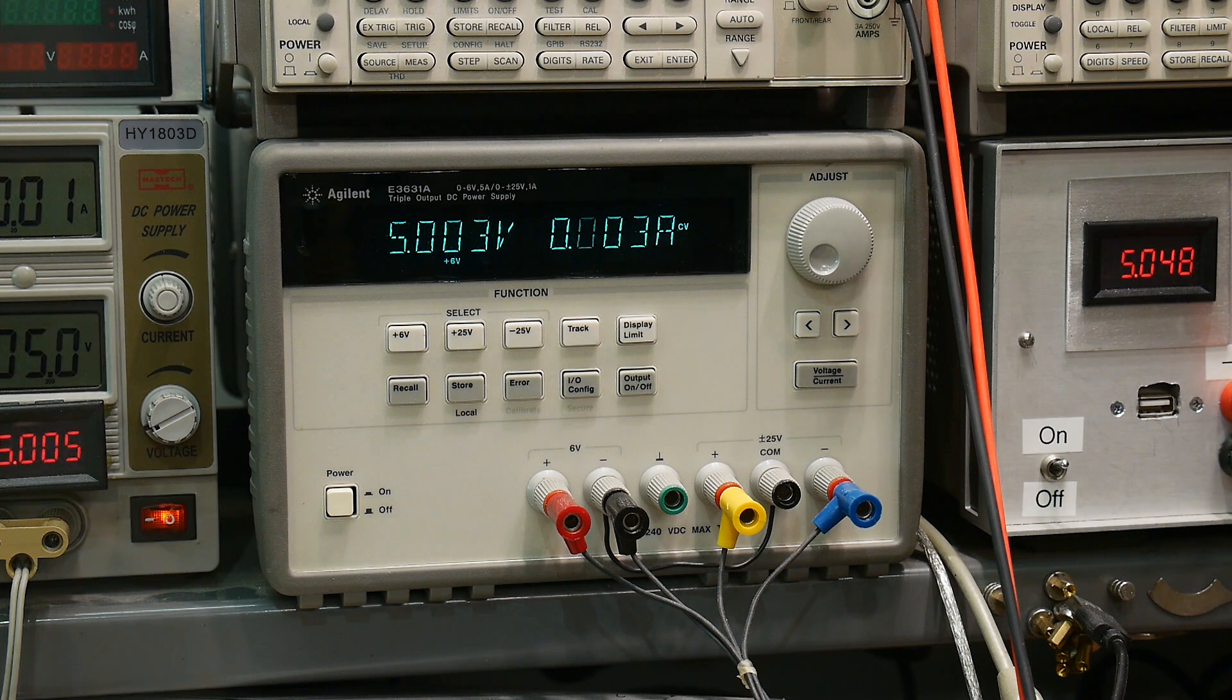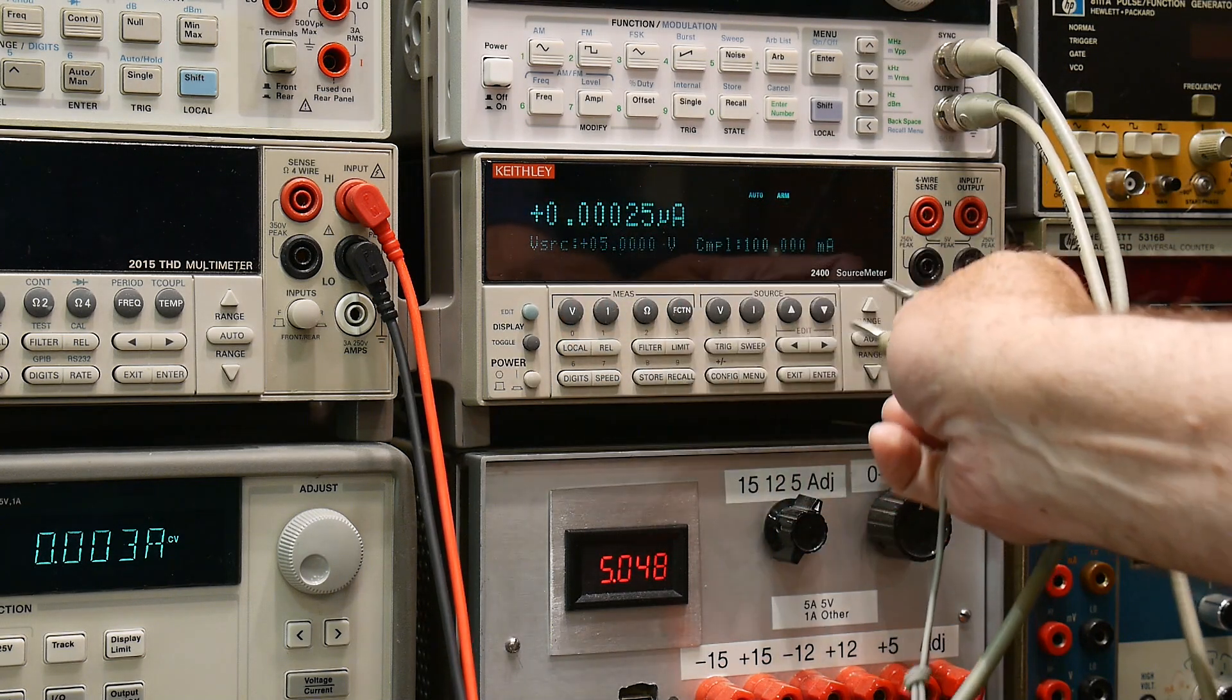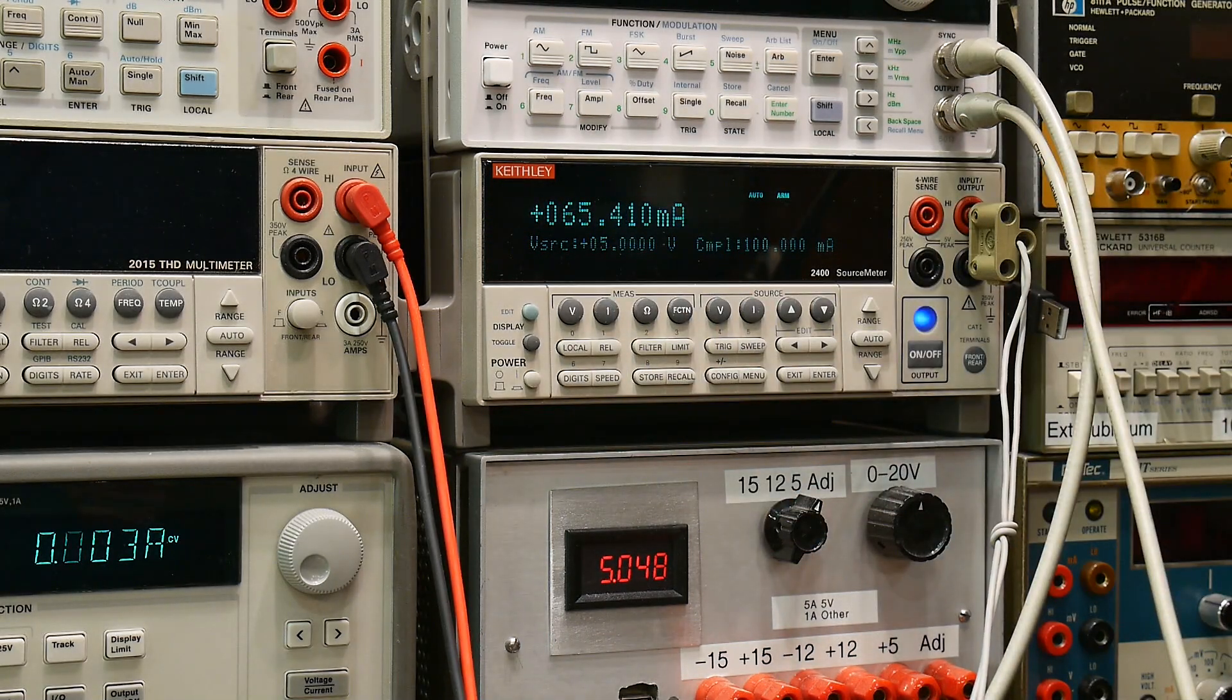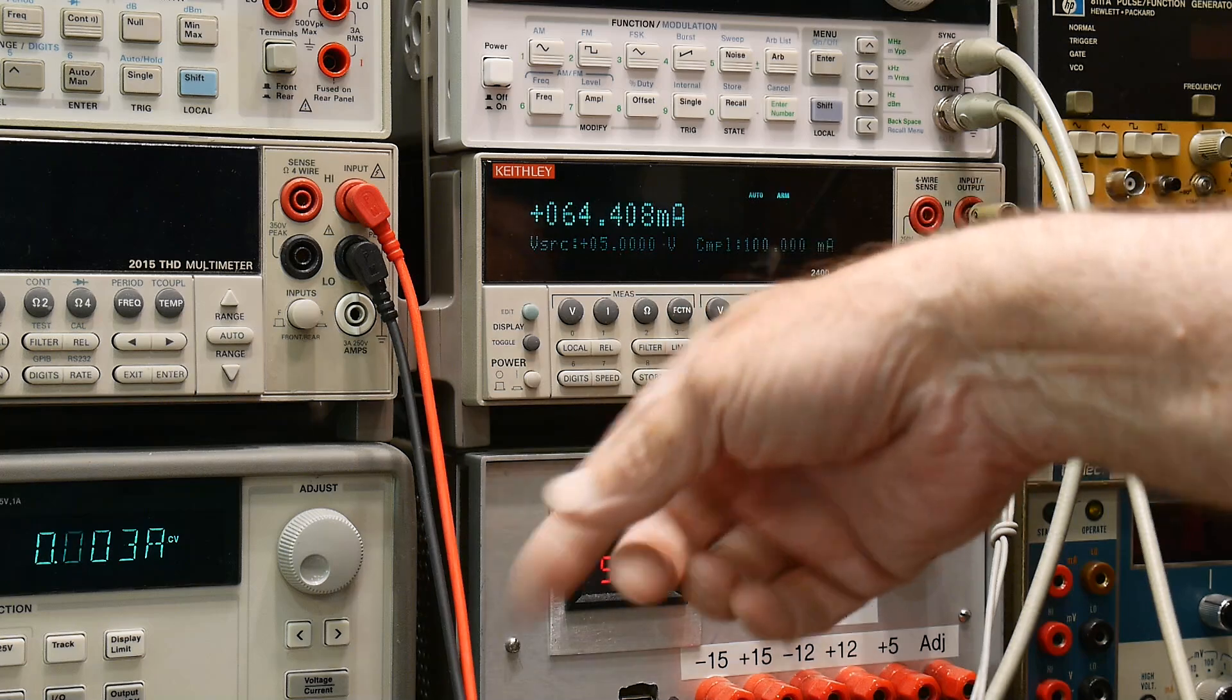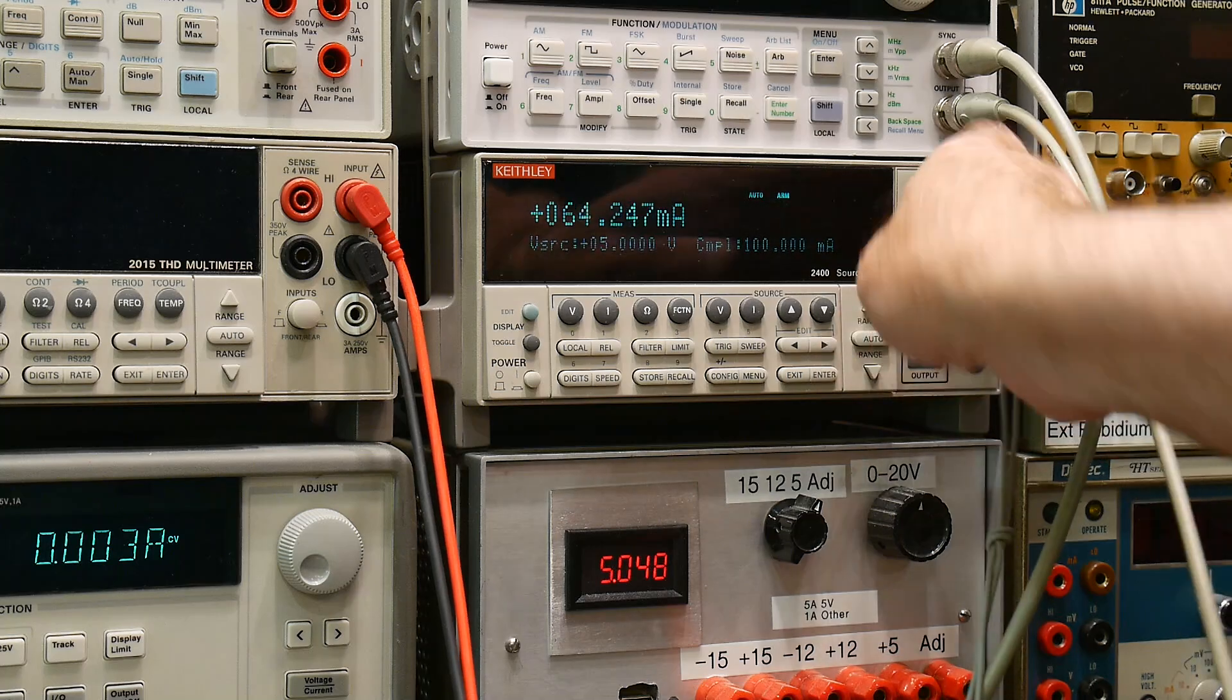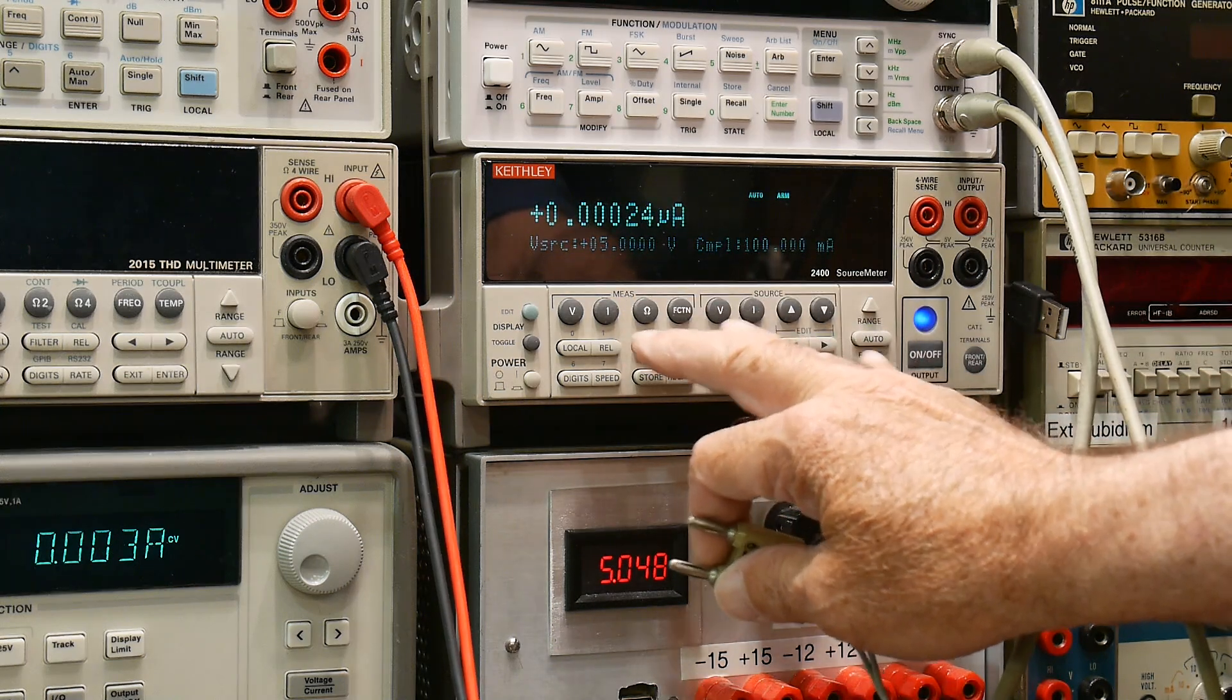Now the most accurate way to do it is if you're extremely lucky and you have a source measurement unit. I have my Keithley 2400 here set to 5 volts and I'm measuring about 65 milliamps with a 5 volt source as well. So this is going to be super, super accurate. That motor is heating up, so 64. So yeah, so really, really, really accurate way of characterizing things with a source meter.